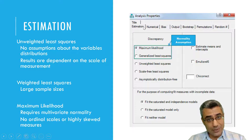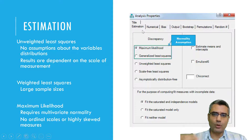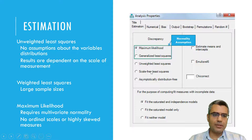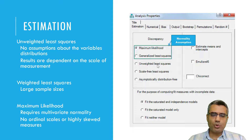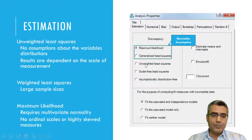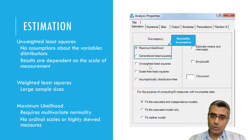Estimation refers to which algorithm you want to use to estimate the parameters — this is found in AMOS under Analysis Properties. There are five options available, each with their own limitations and advantages. For example, unweighted least squares has no assumption about the distribution of variables, so the normality assumption is not required.